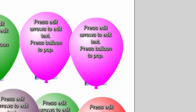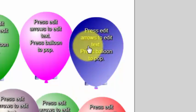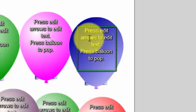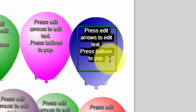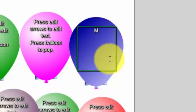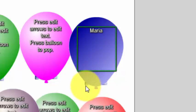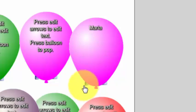I'm going to click on the edit arrows, which are in the lower-left area of the balloon. Now I click on the text and get that green square, I select the text, and I'll name this balloon 'Maria.' Then I go back and click on the edit arrows — so that's going to be Maria's balloon.